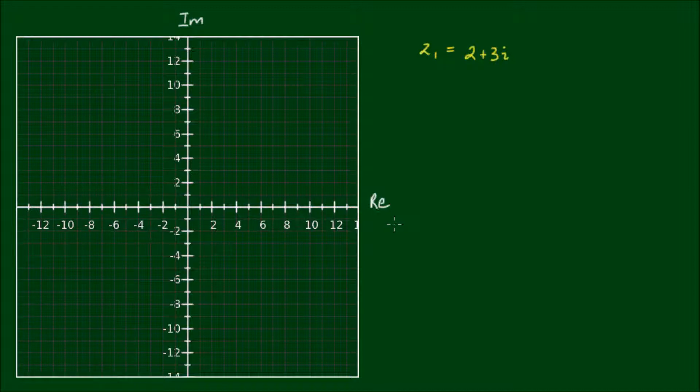But with complex numbers we actually can represent them in two dimensions. We do it by graphing them on what's called an Argand diagram. So here we have a real axis which is the number line that I was talking about, and because complex numbers have an imaginary component, we also have an imaginary axis. So we can represent complex numbers much more visually than we can represent real numbers.